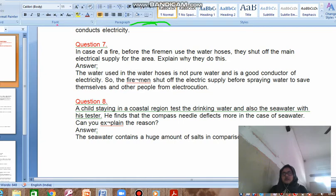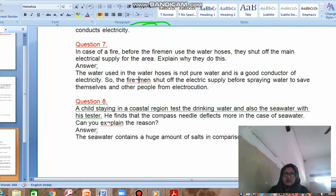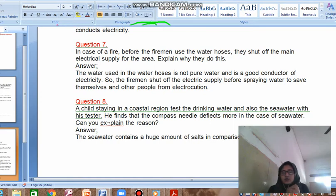In case of fire, before the fireman uses the water hoses, they shut off the main electrical supply. This is a good question. When firemen start spraying water, the area will become more conducting, and if there is an electricity supply, they may also get shocked due to it. Therefore, to prevent electrocution - what is electrocution? It is burning by electricity - so to save other people also, they do this.